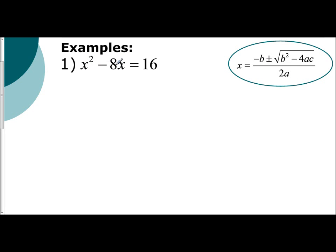If I have x squared minus 8x equals 16, just like when we had the quadratic formula, we're going to set it equal to 0. So I would subtract 16. We would then identify our a, our b, and our c values.